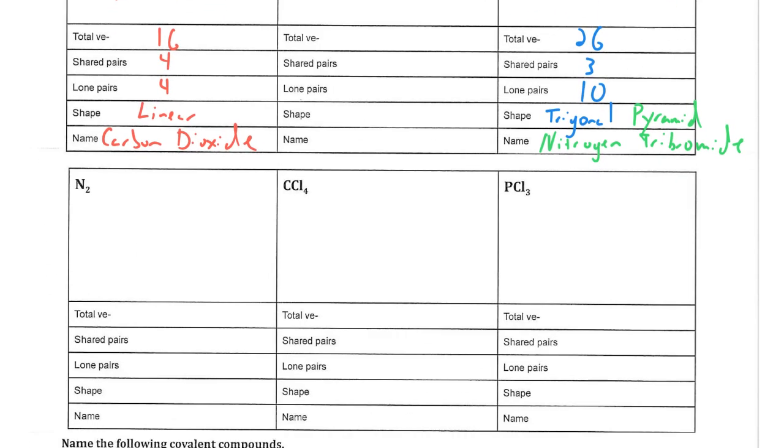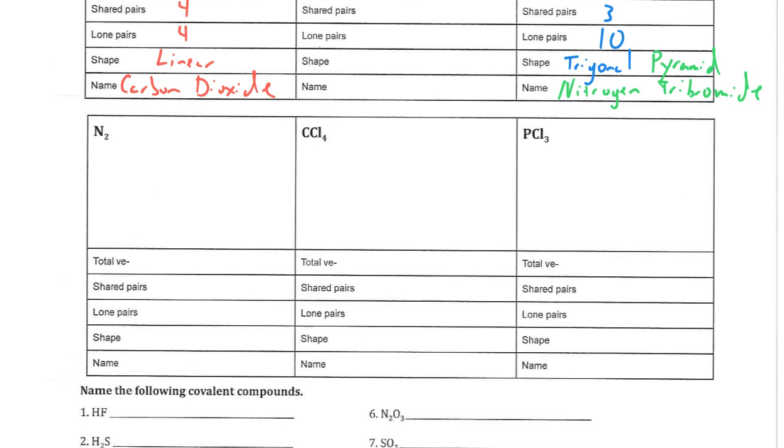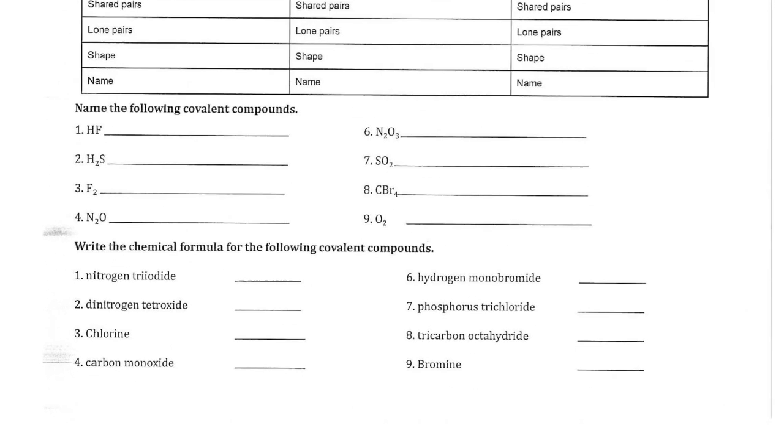That's going to be the same shape as the PCl3. Carbon tetrachloride is tetrahedral. And N2, which is just dinitrogen, that's going to be linear.